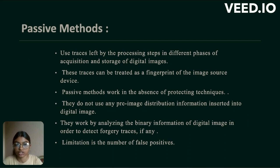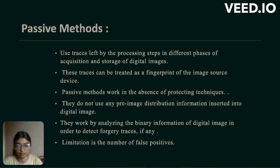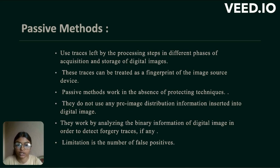Next is the passive method. It uses traces left by processing steps in different phases of acquisition and storage of digital images. These traces can be treated as a fingerprint of the image source device. Passive methods work in the absence of protecting techniques; they do not use any pre-image distribution information embedded into the digital image. They work by analyzing the binary information of the digital image in order to detect forgery traces. A limitation is the number of false positives.